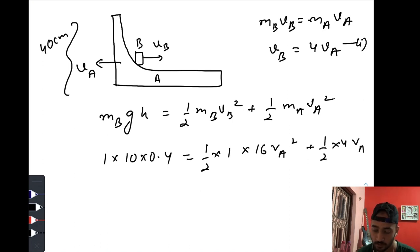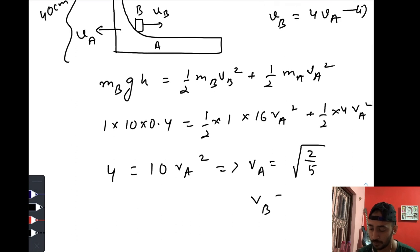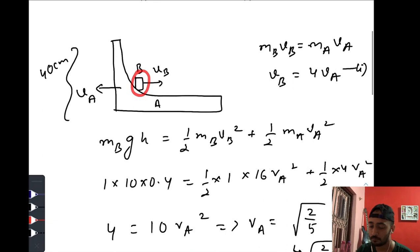4vA squared. So this one is 4: 8 plus 2, 10vA squared. So we got vA equals root 2/5, so vB equals 4 times root 2/5. So we got the velocity of A and B when block B just reaches the bottommost portion.